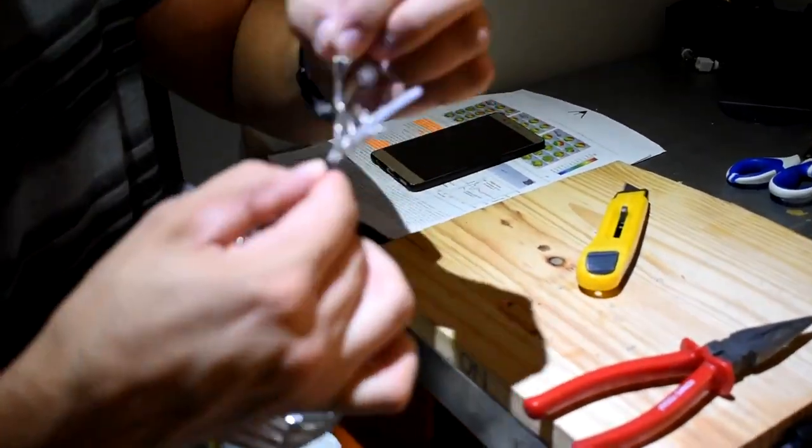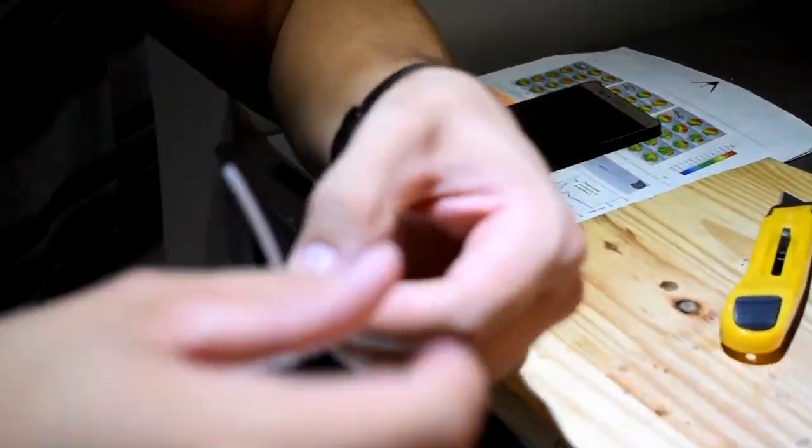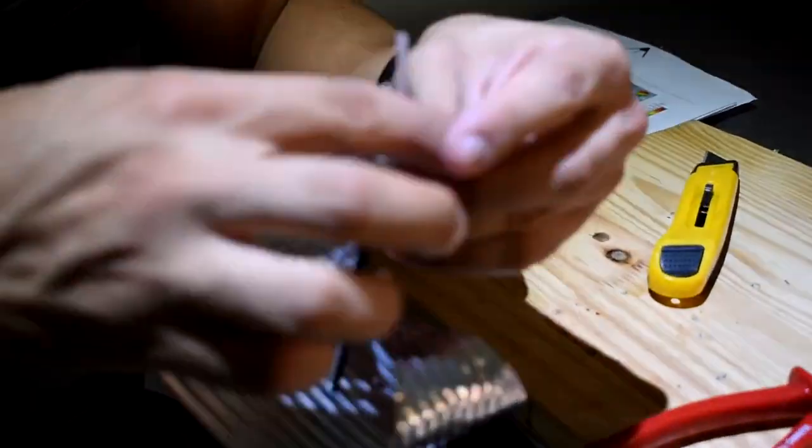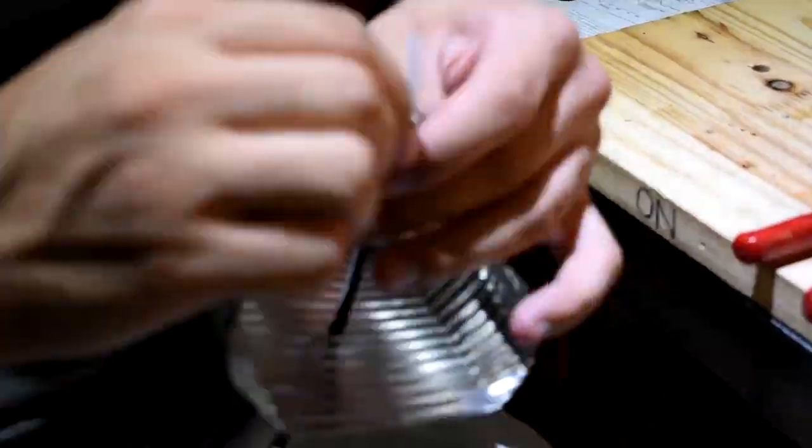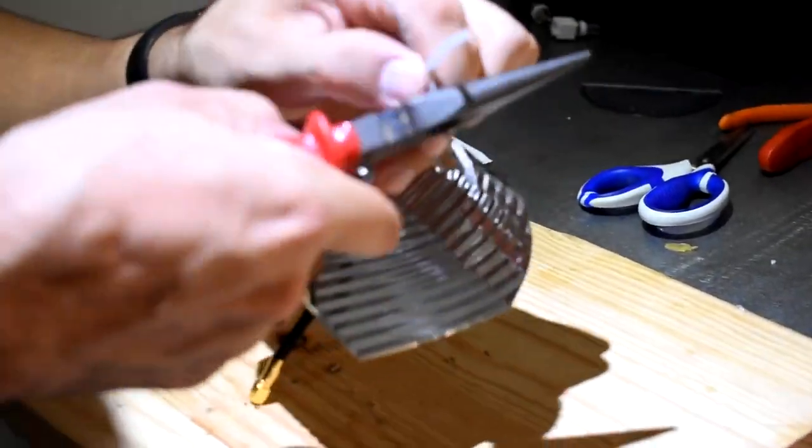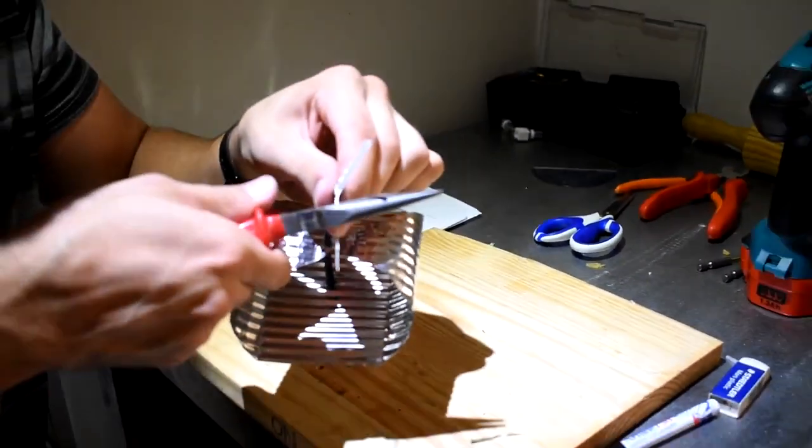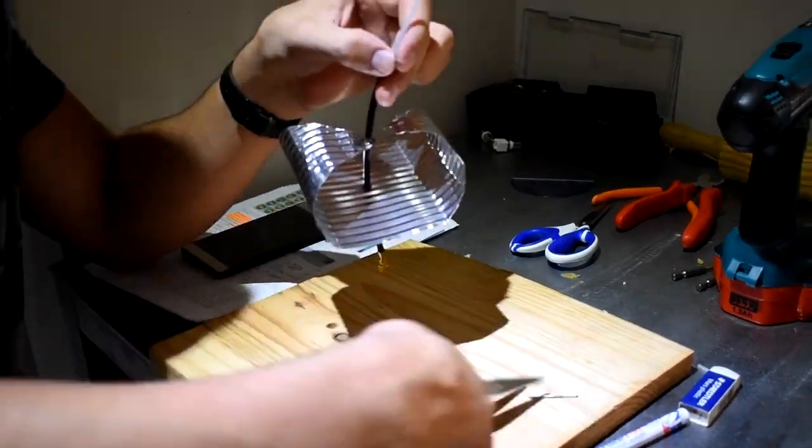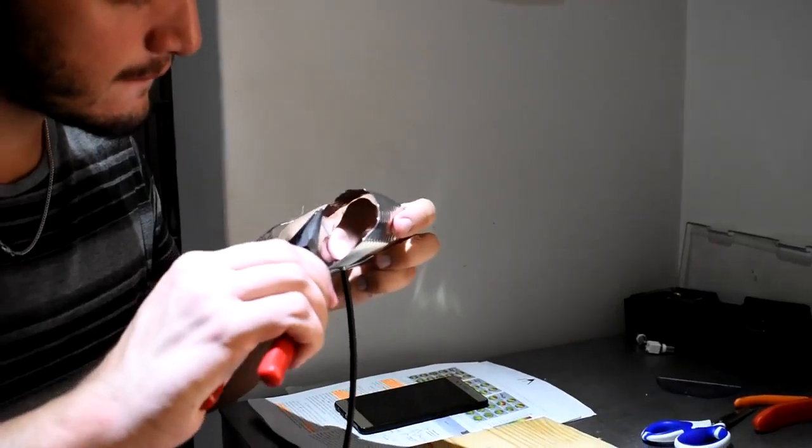Once you have fed the entire coaxial cable through the 5 mm hole, strip away 4 cm of the black outer sheath from the end of the cable. Thereafter, twirl the exposed conductive braid into two strands and cut away any extra wiring to ensure that each strand is approximately 1 cm long.